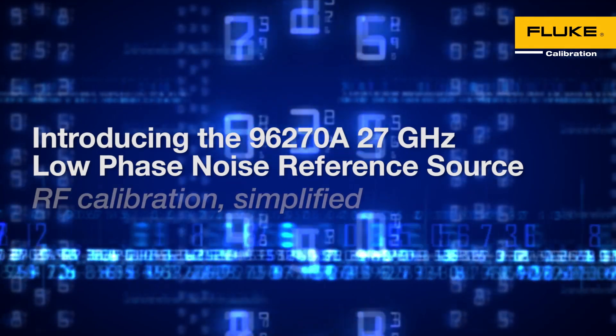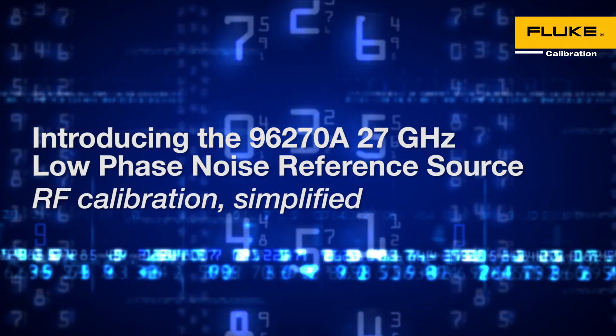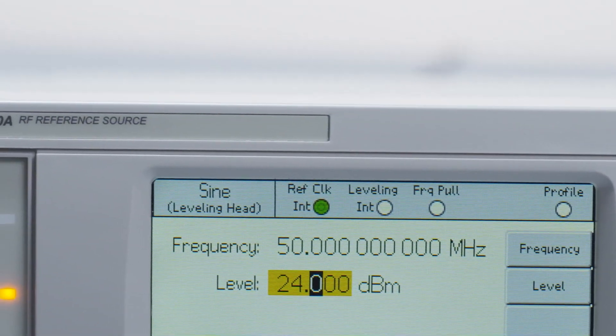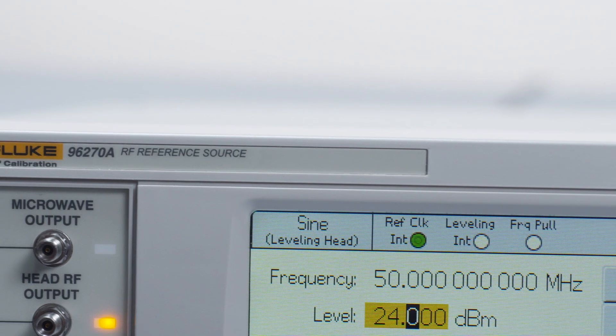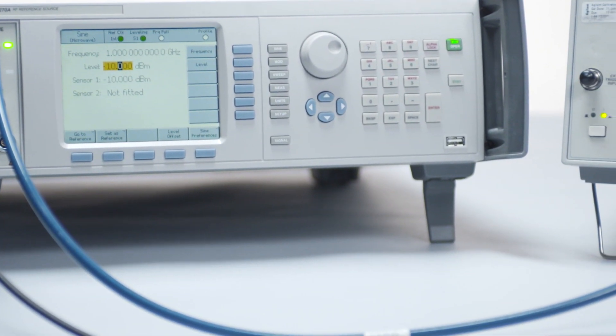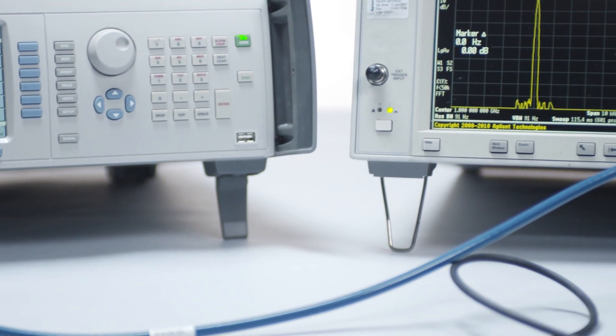Introducing the 96270A 27 gigahertz low phase noise reference source. RF calibration just became a lot less complicated. The Fluke calibration 96270A 27 gigahertz RF reference source is the simplest and most accurate single instrument for calibrating spectrum analyzers, RF power sensors, and more.